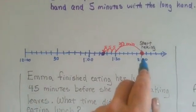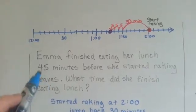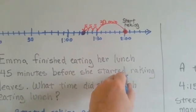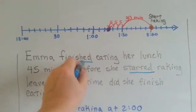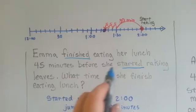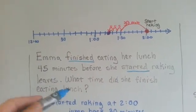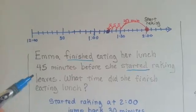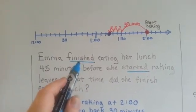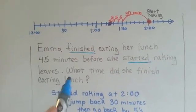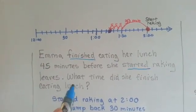They started raking at 2 o'clock. Emma finished eating her lunch 45 minutes before she started raking. She finished eating her lunch 45 minutes before she started raking the leaves because she needed to get the rake and the bag. She needed to find Tala and get ready. So it took 45 minutes between lunch and starting to rake leaves. So what time did she finish eating lunch?